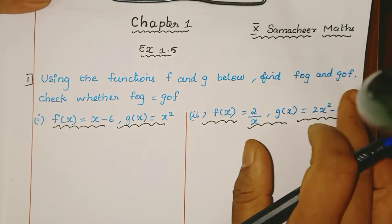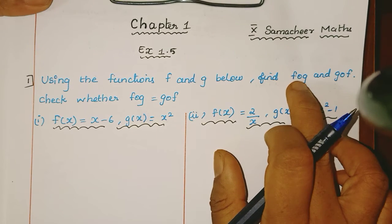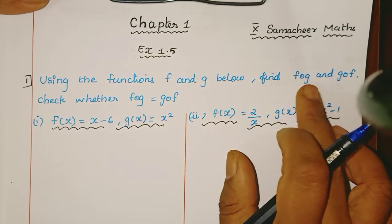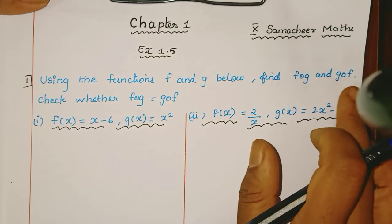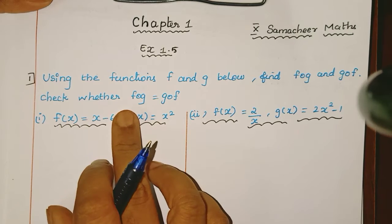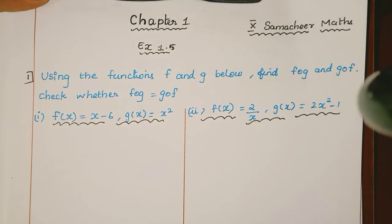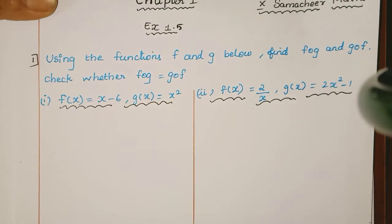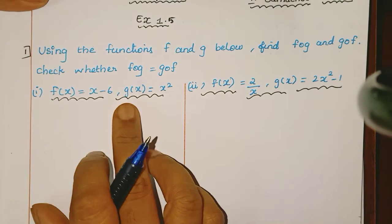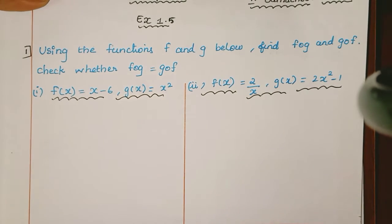We are going to find f∘g and g∘f, and check whether f composition g is equal to g composition f. For the first sum: f(x) = x minus 6, and g(x) = x squared.